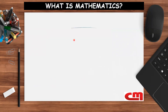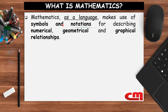What is mathematics? Mathematics as a language makes use of symbols and notations for describing numerical, geometrical, and graphical relationships. We need to understand that mathematics is a language — it uses symbols and notations to describe these relationships.